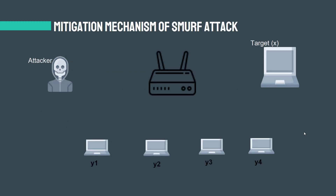Let me show you my simulation. Here we have the attacker, the router or target that I called X, and some of the other computers or devices in the network which I call Y1, Y2, Y3, and Y4. First, the attacker with a spoofed source pretends himself as source X and sends the message to destination Y1. Y1 responds to the router, but thinks it received the message from source X, so the response goes to target X. This repeats for subsequent messages.